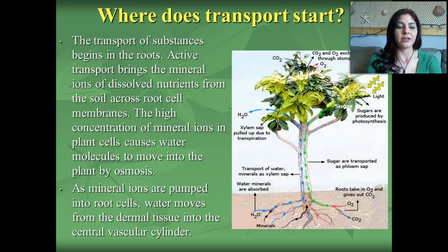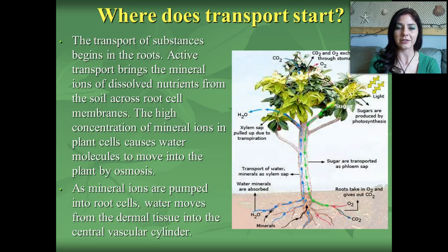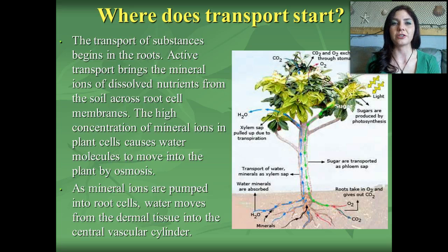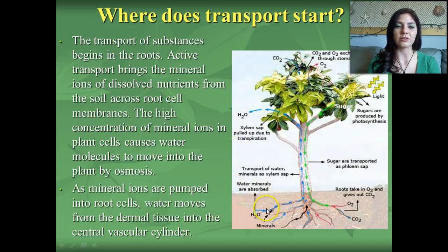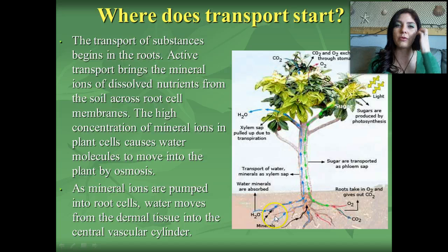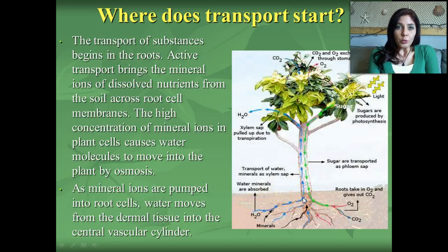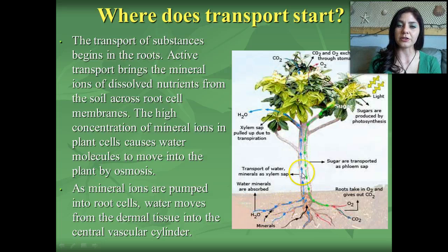Where does the transport start? The transport of substances begins in the roots. Active transport transports minerals and ions of dissolved nutrients from the soil into root cell membranes — remember, active transport requires energy, moving against the concentration gradient from low to high concentration. The high concentration of mineral ions in the plant cells causes water molecules to move into the plant through osmosis. This makes the plant hypertonic — and remember, hyper sucks — so that hypertonic environment sucks water into the roots, where it gets dispersed to where the plant needs it.